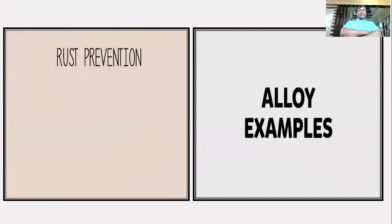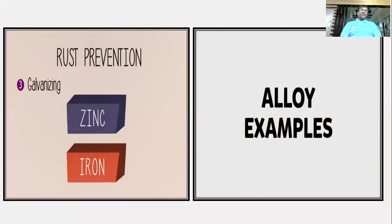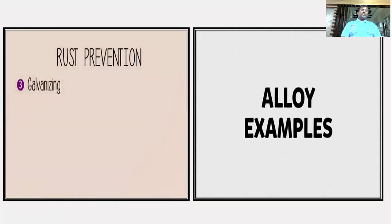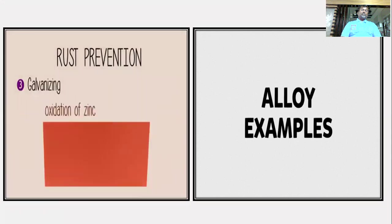Another way to prevent rusting is a sacrificial protection method called galvanizing. Zinc is more reactive than iron. When exposed to oxygen and moisture, zinc corrodes faster than iron — so when put together, zinc protects iron by sacrificing itself, hence the term sacrificial protection. This method is applied to prevent rusting on ships.